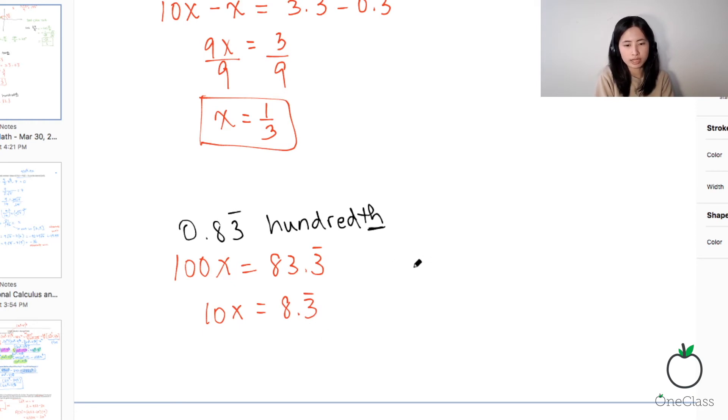So when I write this up, I would have 100x minus 10x, which is equal to 83.3 repeating minus 8.3 repeating. So if I take this number and this number, I subtract them together. You would get 83.3 minus 8.3. That would give you 75. So this is actually 90x and this is equal to 75.